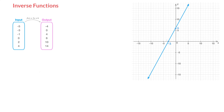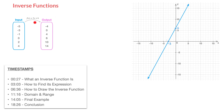We now learn about inverse functions. We'll learn what an inverse function is, and starting from a function f, we'll learn how to find an expression for its inverse function. We'll then learn how to draw a function's inverse function starting from its graph, and finally we'll learn about the domain and range of a function's inverse function.